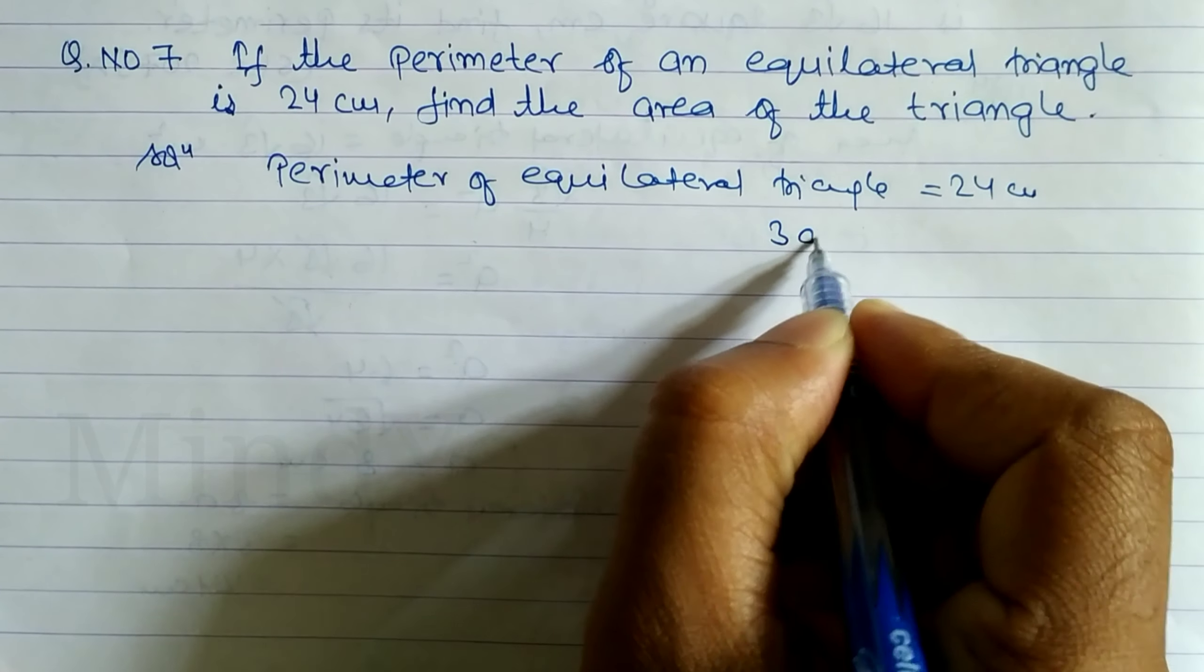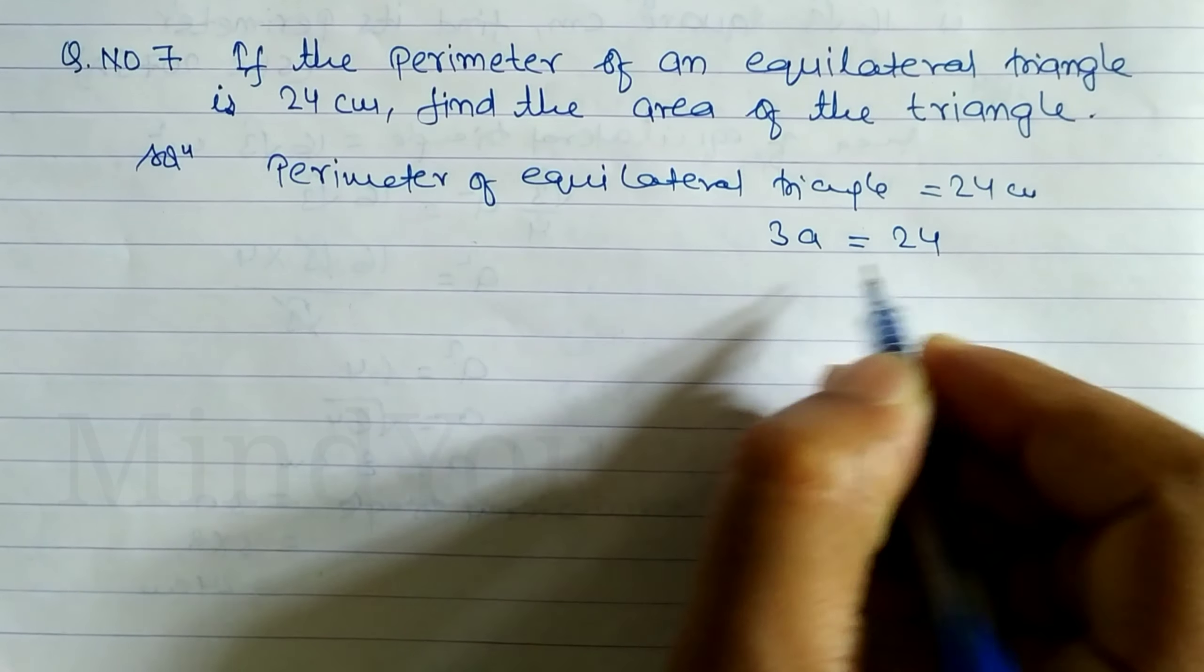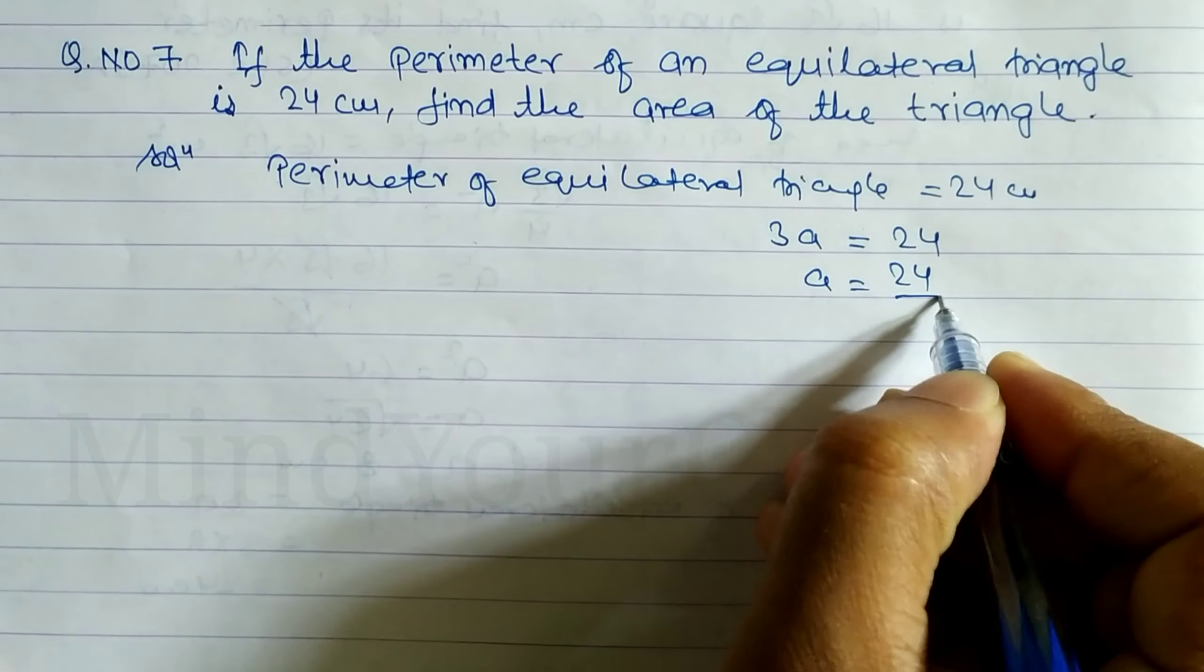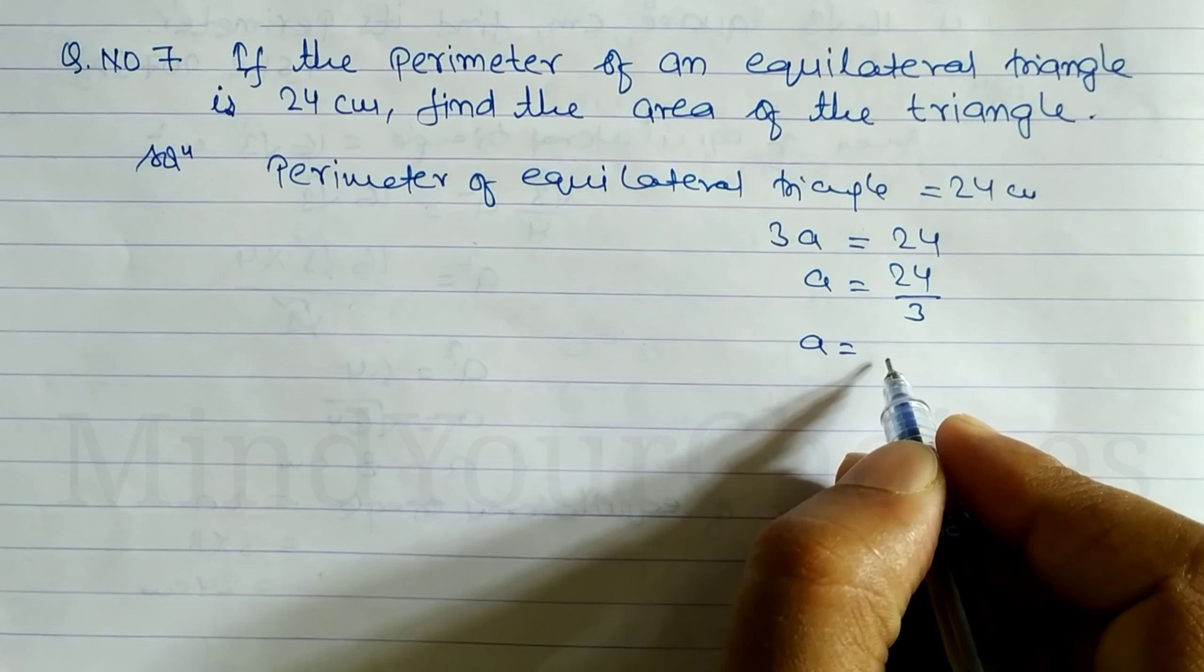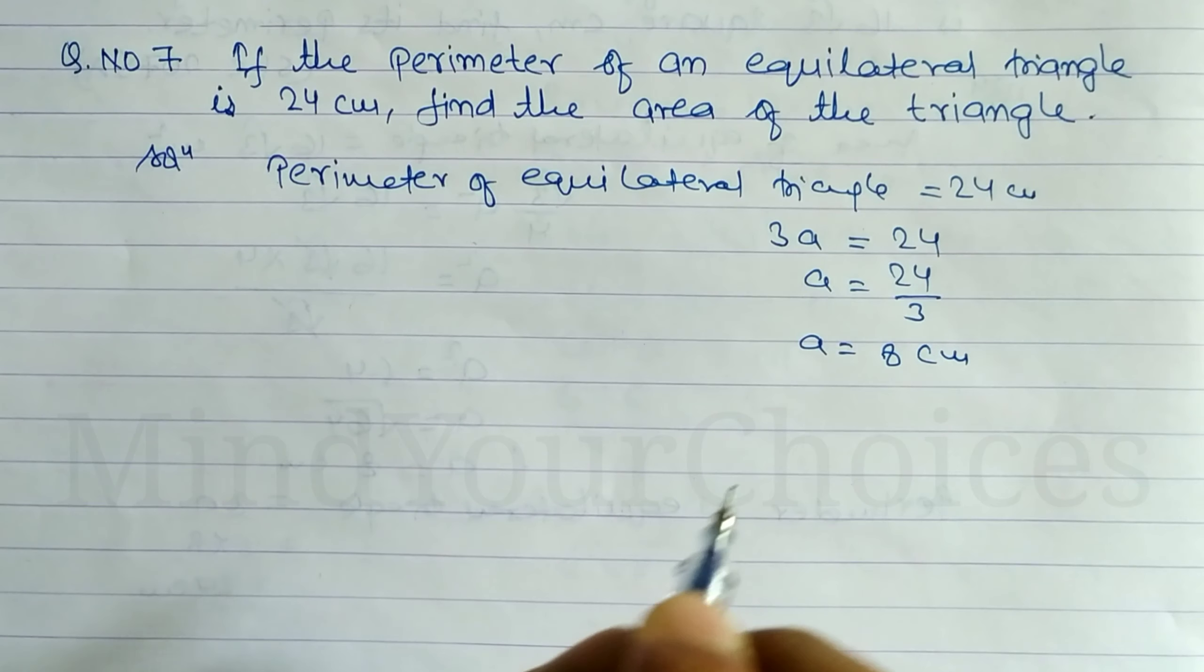Equilateral triangle formula is 3a. So write down 3a is equal to 24. a is equal to 24 by 3. a is equal to, just divide it, and we get here 8 cm. Okay, up to here.